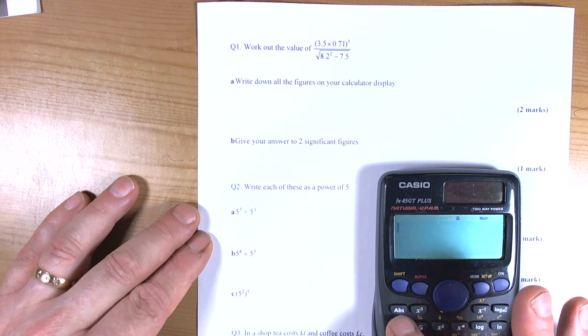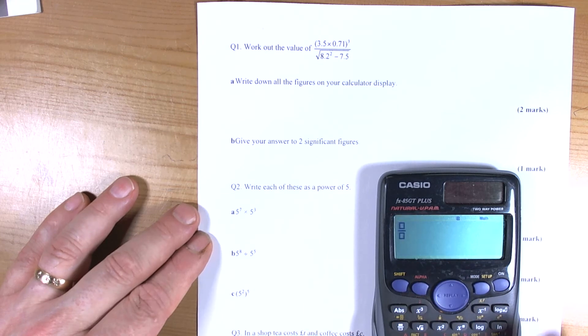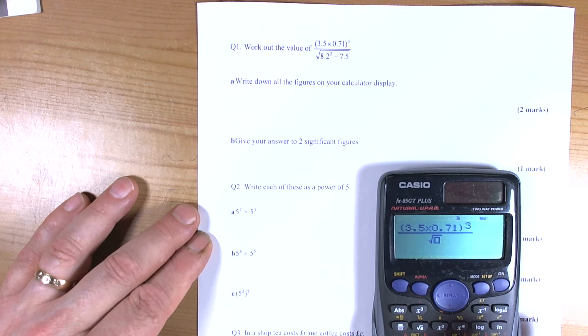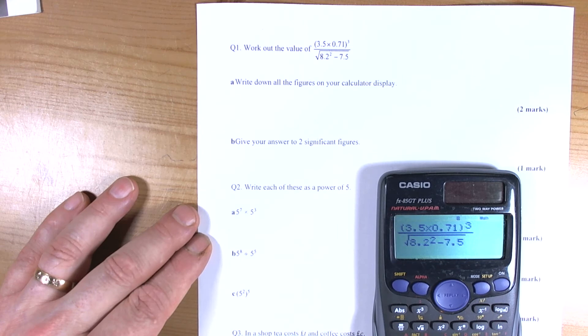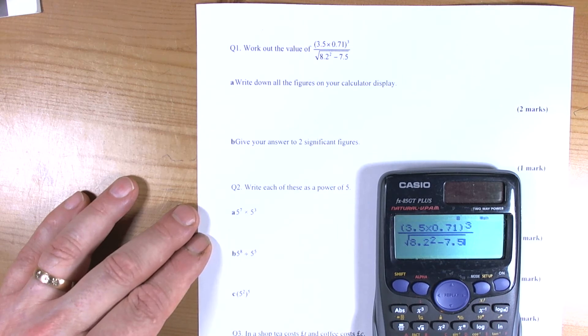So we press the fraction key and we type in what we see at the top: 3.5 times 0.71 all cubed, and then we want the square root of 8.2 squared take away 7.5. So that should be everything written in correctly, just check it, 8.5 plus 7 cubed, so I press equals.